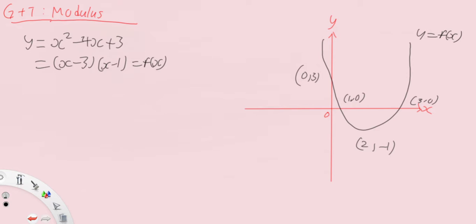Now it's time to sketch the modulus graph. There are two different types of modulus graph you need to know how to sketch: starting with y equals mod f(x), and the other would be y equals minus mod f(x). I'll also show you the graph of y equals f(mod x). Let's begin with the first one, mod f(x).